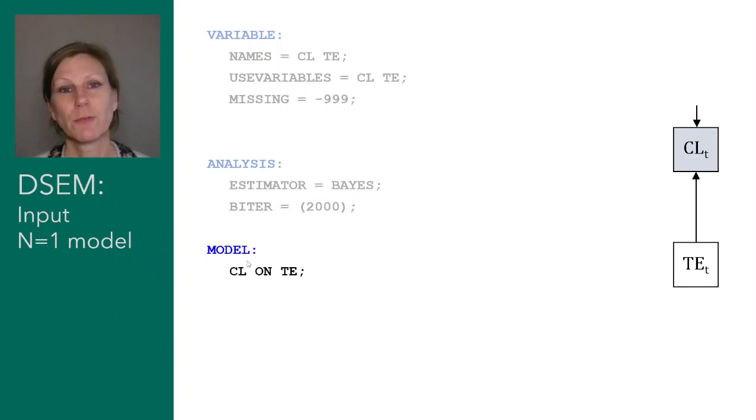In the model command, we can actually specify the model that we want. And here I'm going to say closeness on tension, so that means closeness is predicted from tension. There will be an arrow going from tension to closeness.